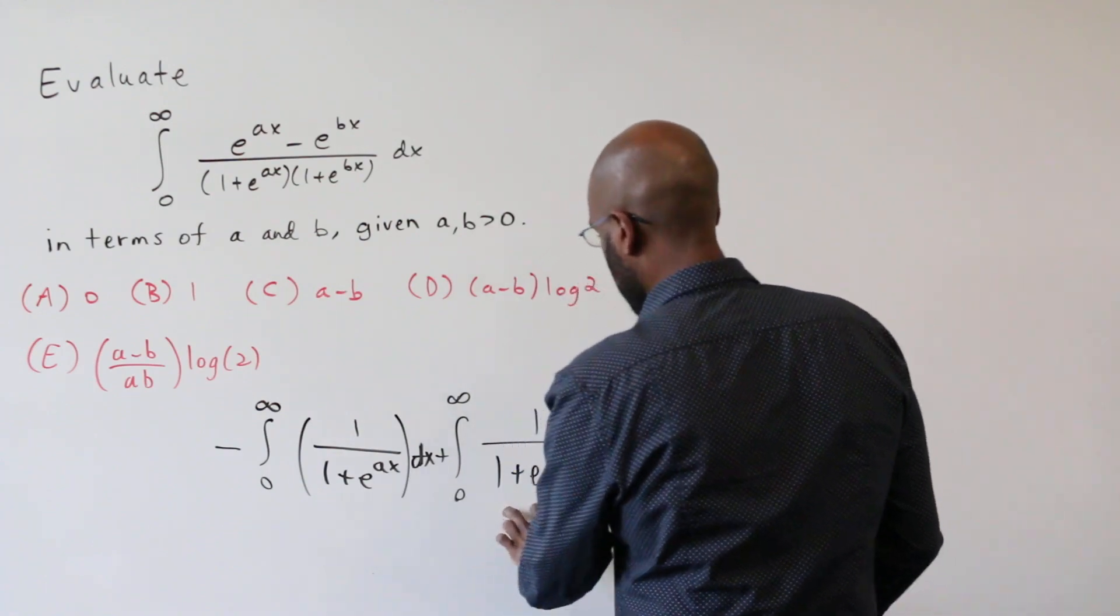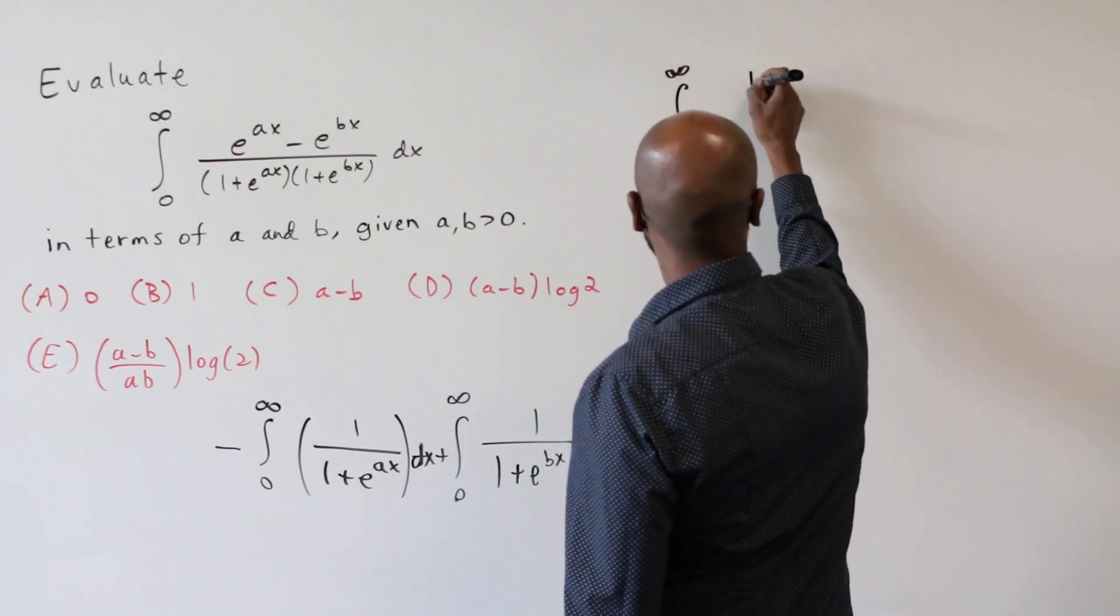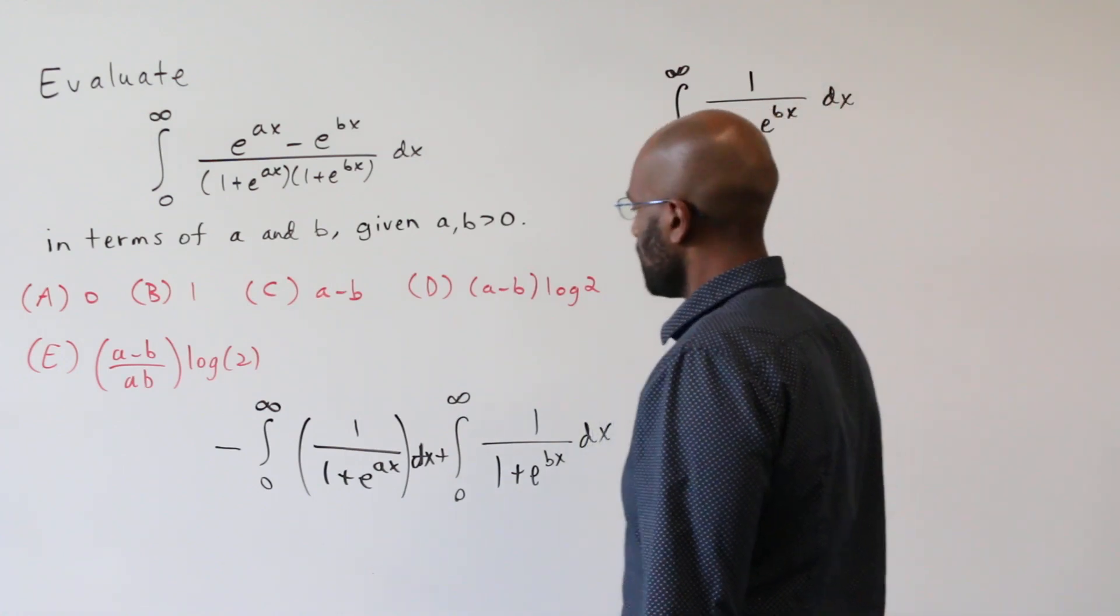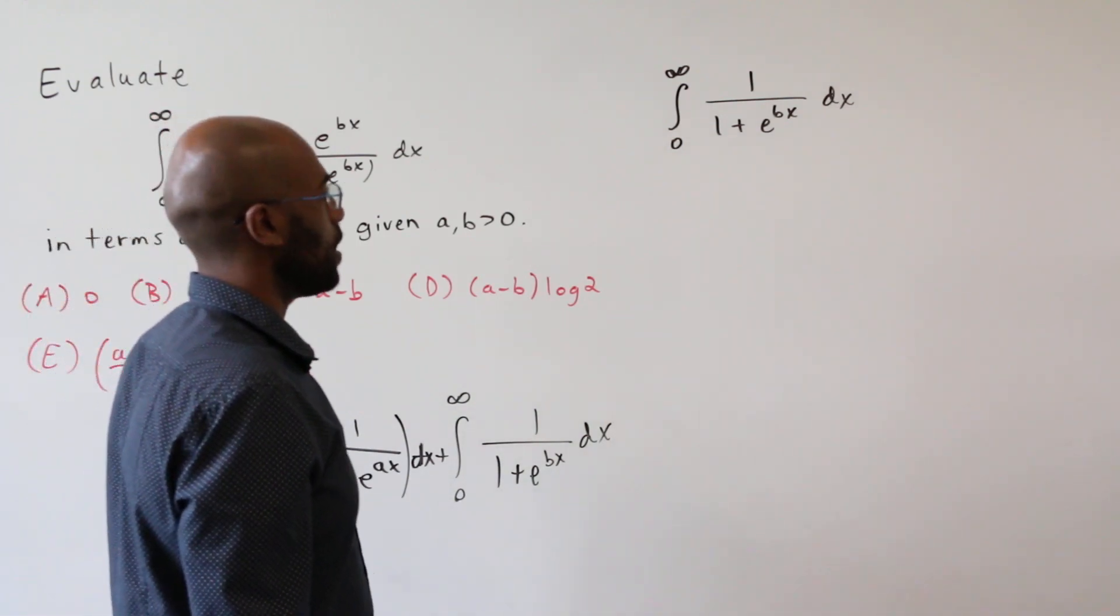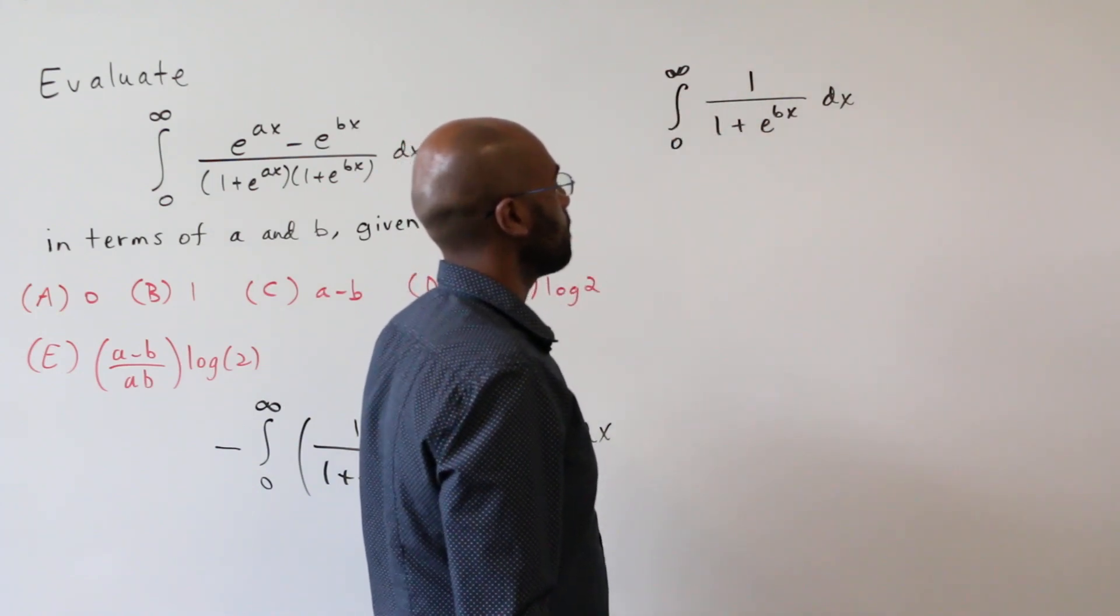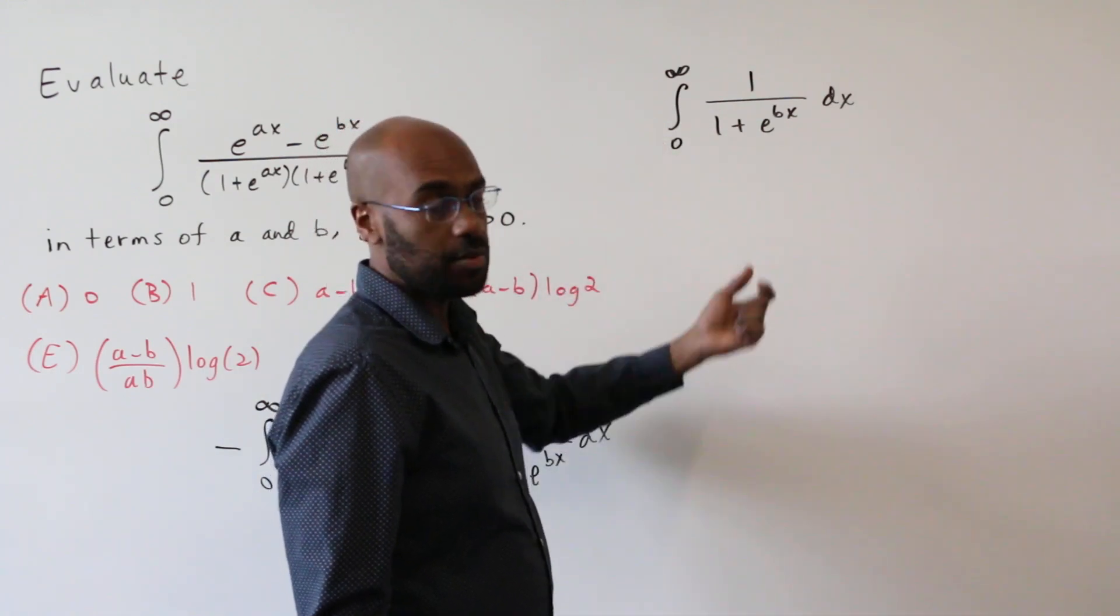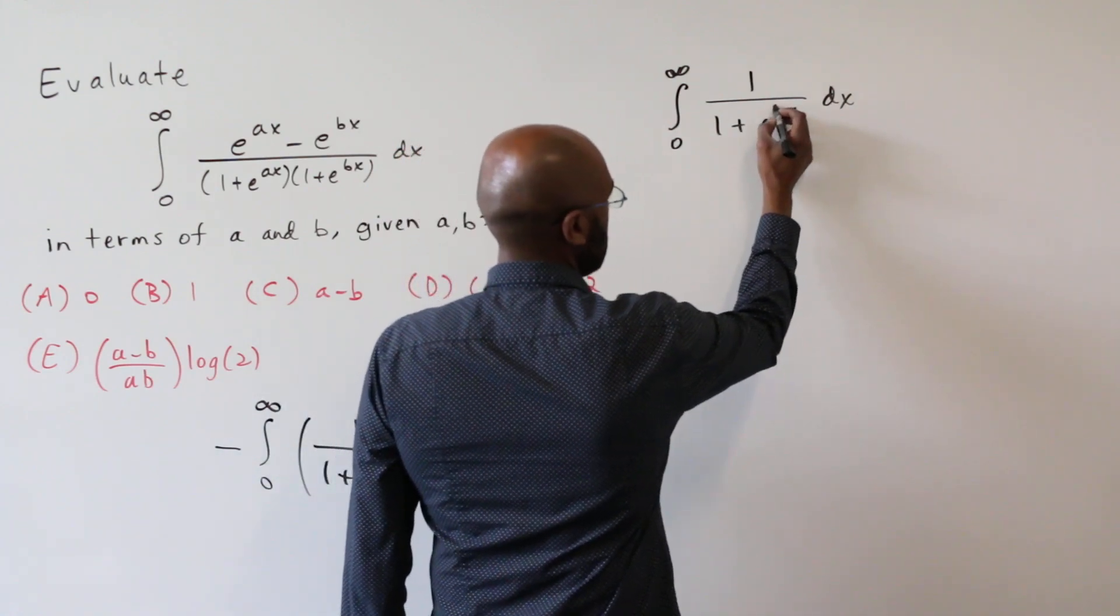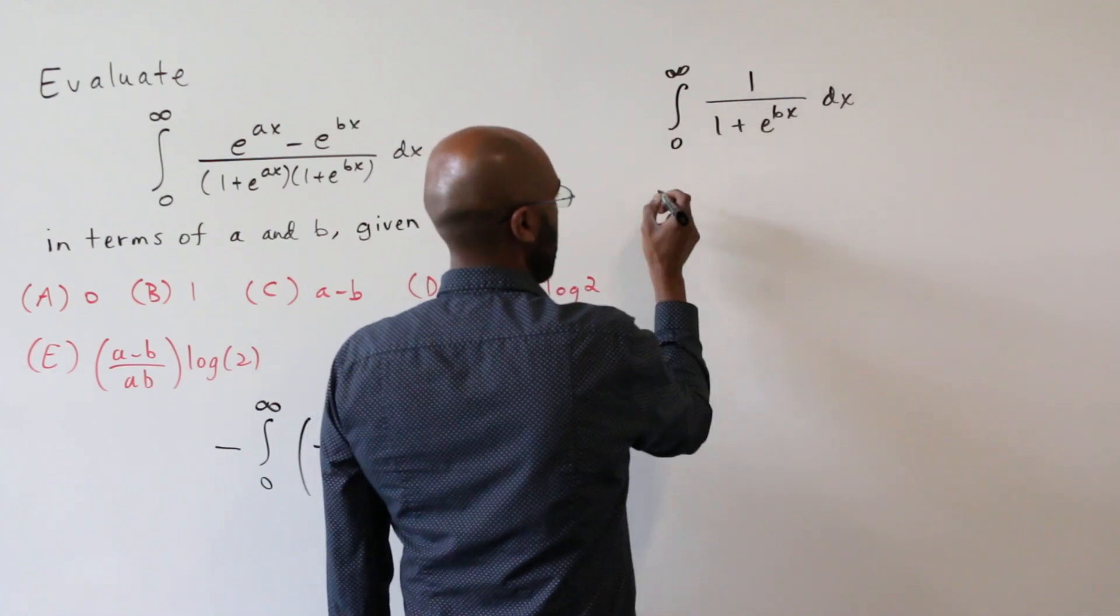So let's work on this right hand one. It's the integral from zero to infinity of one over one plus e to the bx. Now when you look at this integral, it kind of looks like we don't have much options for what to do. Like the denominator's derivative is not the top. It would be nice if you had an exponential floating somewhere to work with.